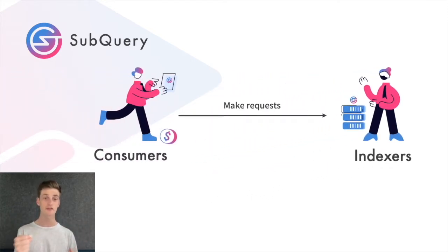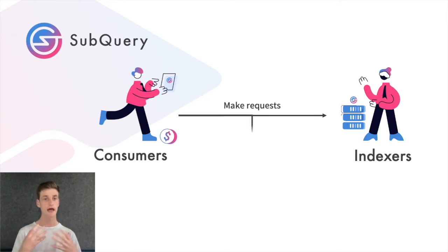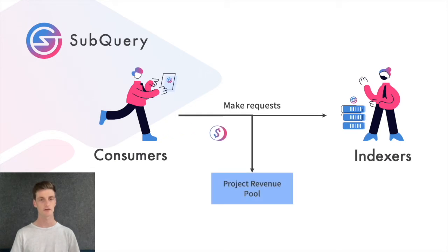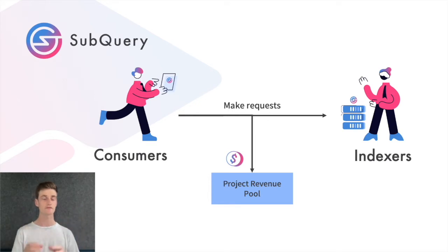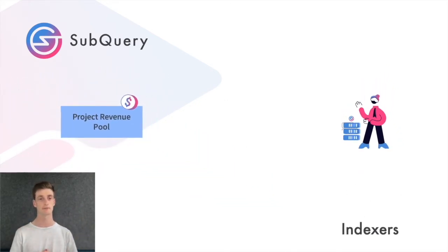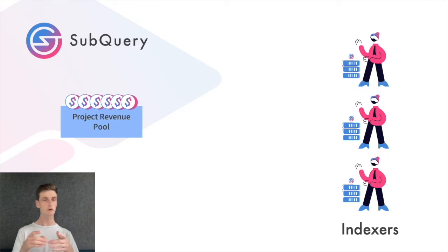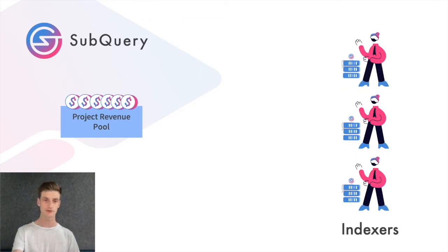Consumers will make those requests to the SubQuery network for specific data and will pay an advertised amount of SubQuery tokens. This payment goes into a project revenue pool, and there's one project revenue pool for every different SubQuery project. At the end of what we call a staking era, which is a 28-day period, we take this project revenue pool and split it.